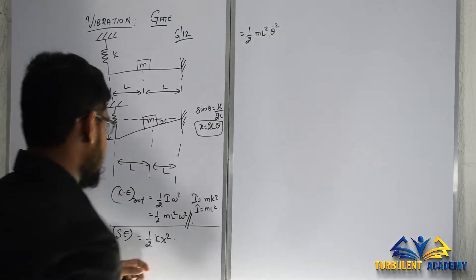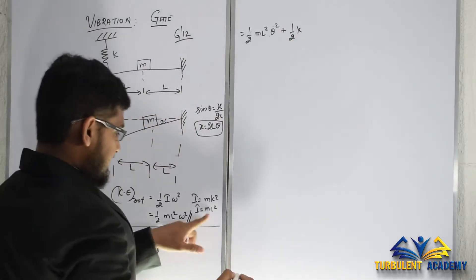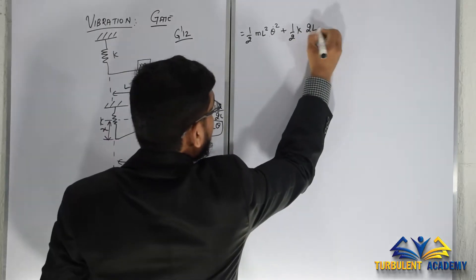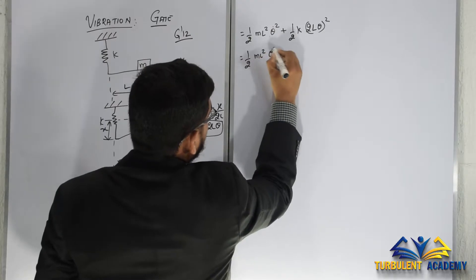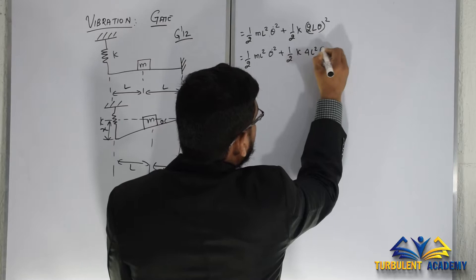Plus half k into x is actually 2l theta, so 2l theta the whole squared. So half ml squared theta dot squared plus half k into 4l squared theta squared. This is the energy of the system.